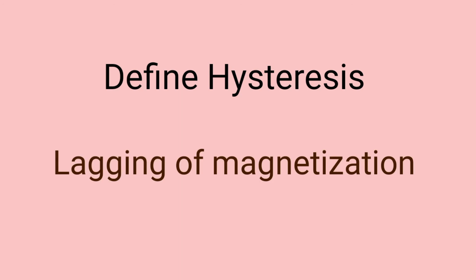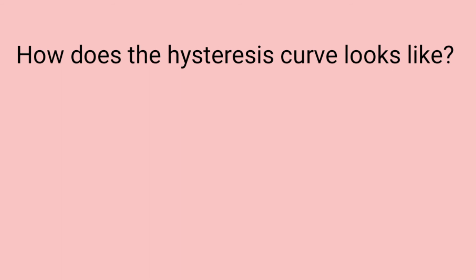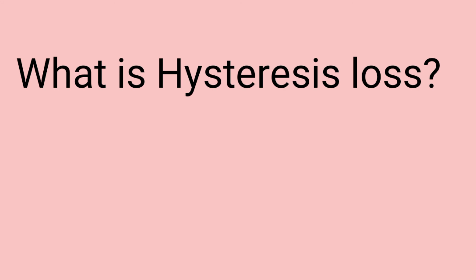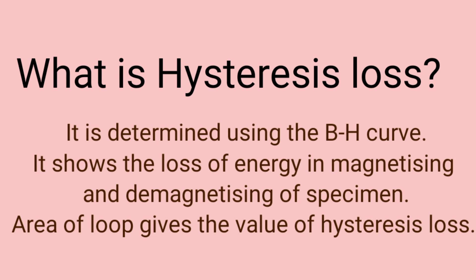Define hysteresis. In minimum words, it is the lagging of magnetization. The hysteresis curve, or hysteresis loop, shows this behavior. What is hysteresis loss? Hysteresis loss is determined by the BH curve and it shows the loss of energy in magnetizing and demagnetizing the substance. The area of the loop gives the value of the hysteresis loss.